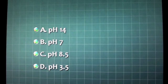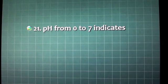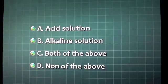pH number indicating a neutral solution: A. pH 14, B. pH 7, C. pH 8.5, D. pH 3.5.